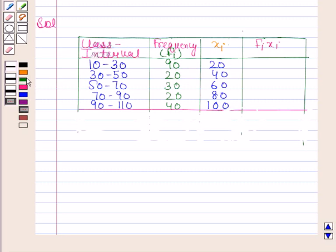90 into 20 is 1800. 20 into 40 is 800. 30 into 60 is 1800. 20 into 80 is 1600. 40 into 100 is 4000.